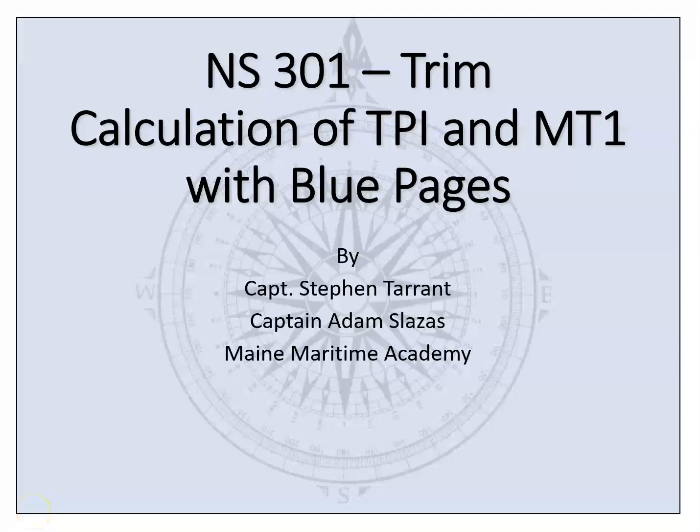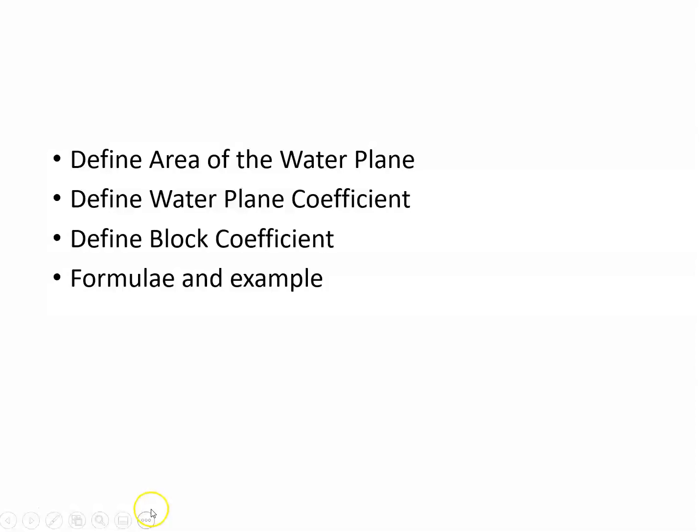In this video, I'm going to show you how you can calculate the TPI and MT1 for a vessel using the blue pages. First we're going to define the area of the water plane, then we're going to define the water plane coefficient, then we'll define the block coefficient, and then I'm going to introduce a couple of formulas and we'll do one example. You'll have a few problems to do for this assignment.